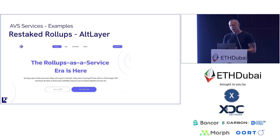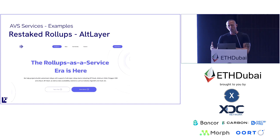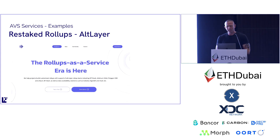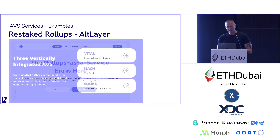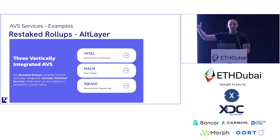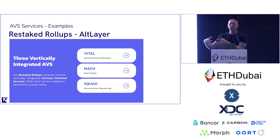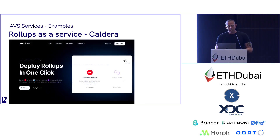Altlayer combines rollups-as-a-service with AVSs. They allow you to build and deploy your own rollup stack — you can pick OP, Arbitrum, or ZK Sync — and choose your data availability layer, supporting EigenDA, Celestia, and others. Interesting is that they have vertically integrated AVSs you can deploy along with your rollup. They call these 'restaked rollups' — you can have your own decentralized sequencer network and other pieces of the stack that you completely own as an AVS, with restaking built in.